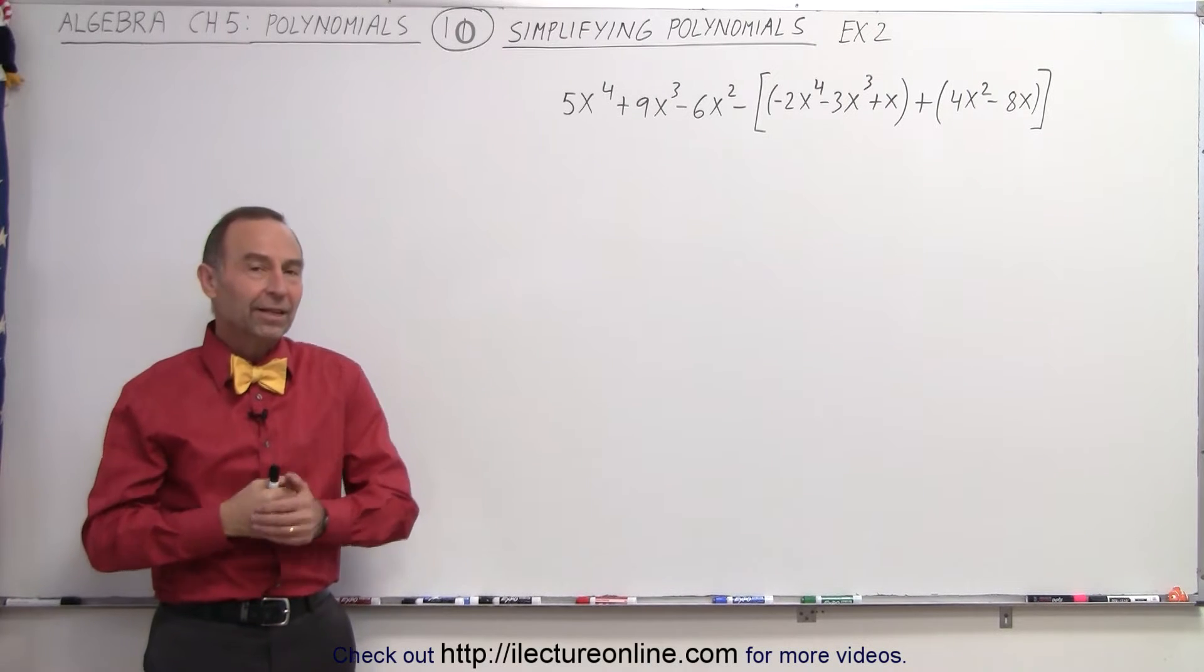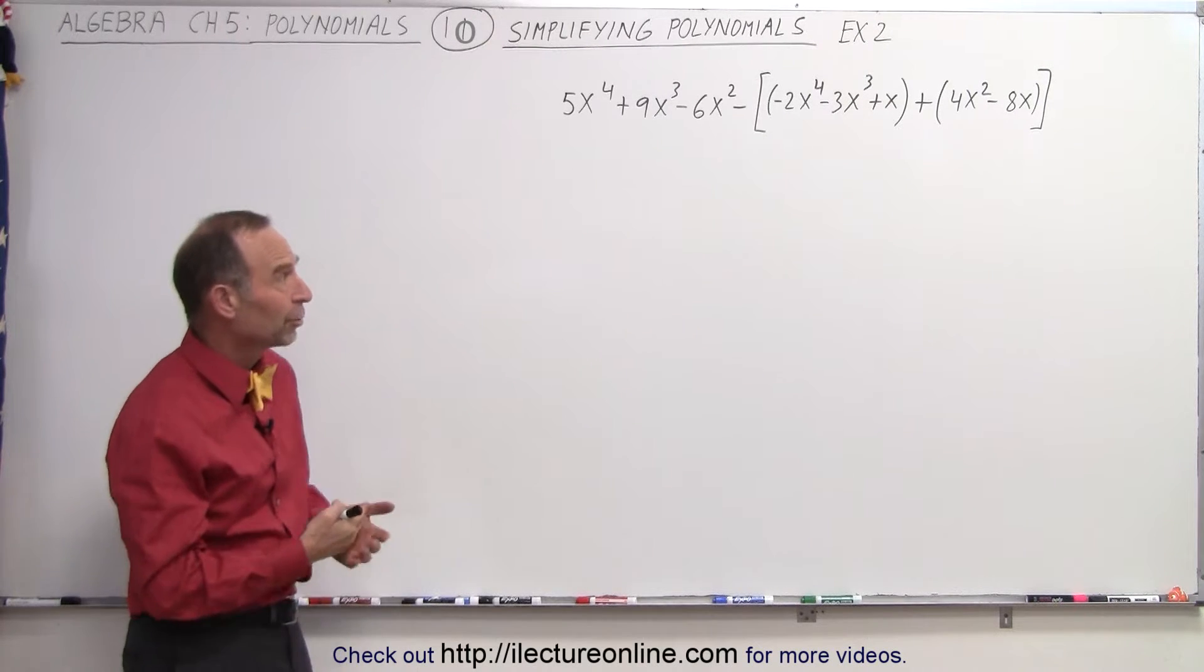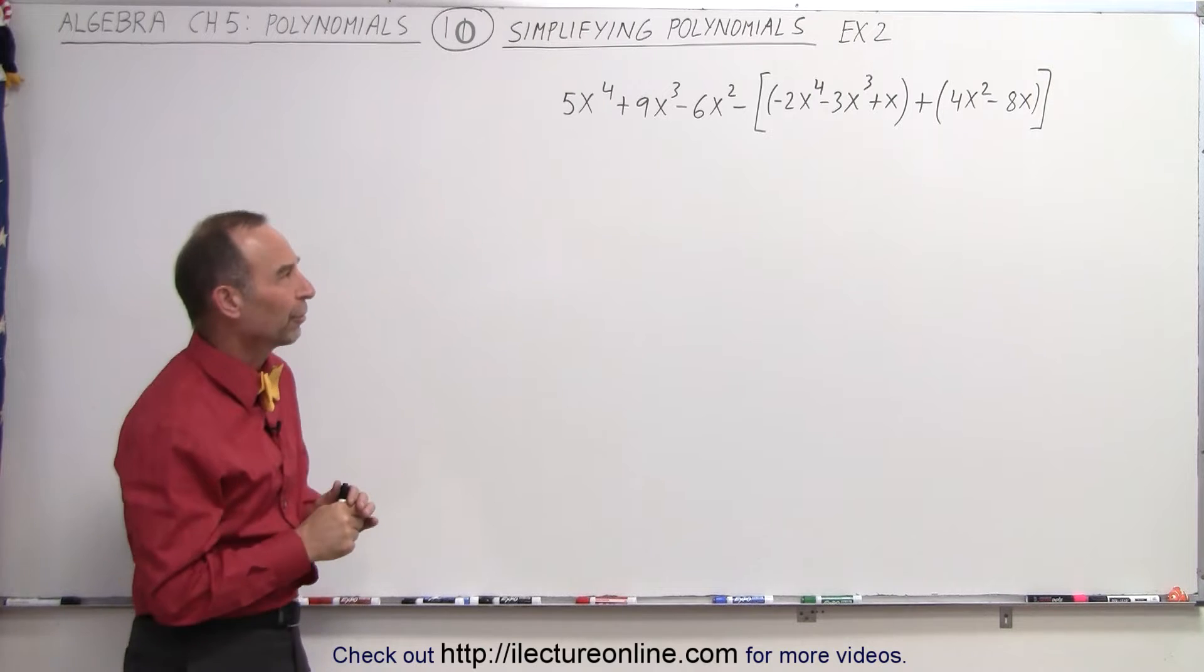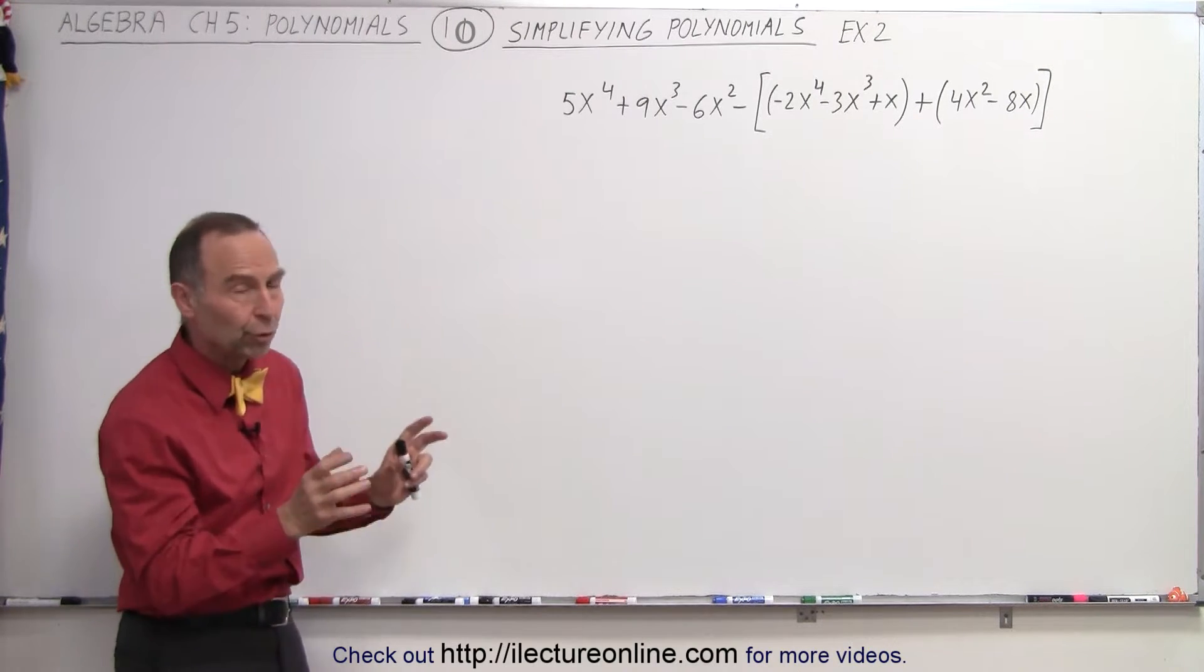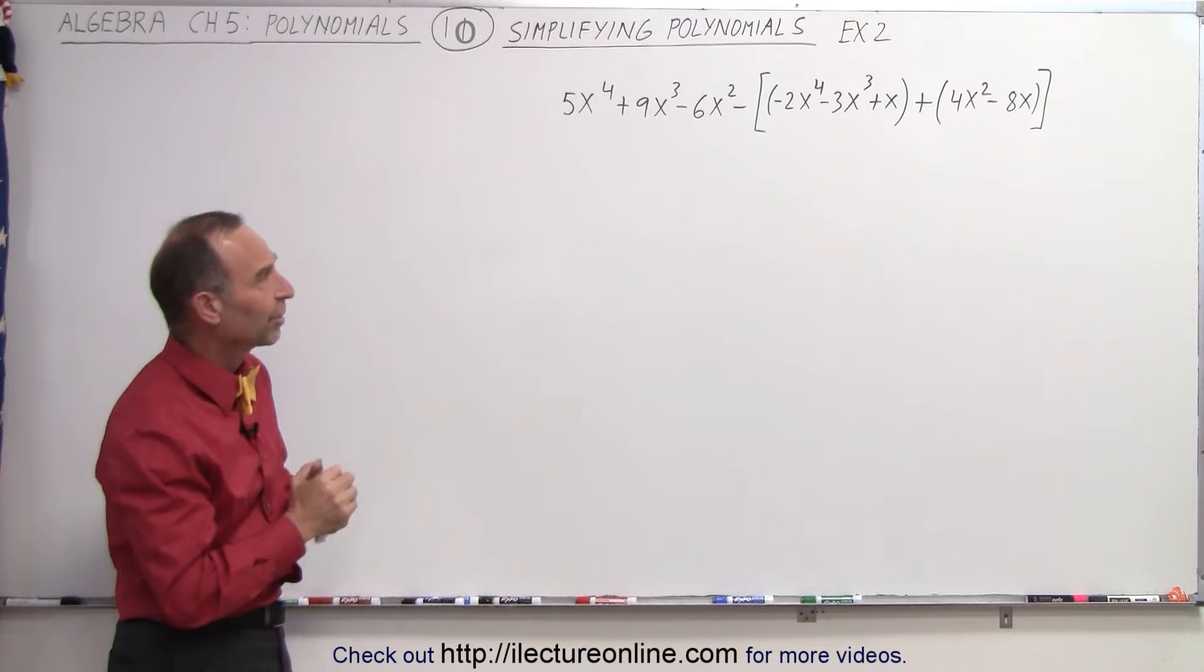Welcome to ElectronLine. Our next example of how to simplify polynomials has something special for us. Here we have some brackets. Inside the brackets, notice we have two sets of polynomials inside parentheses.